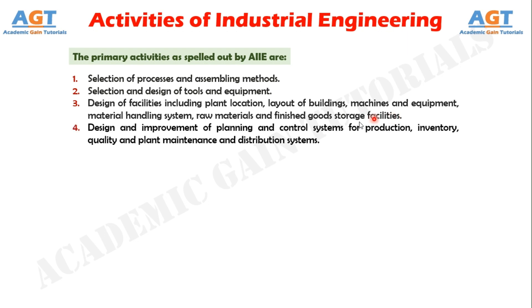Number four, design and improvement of planning and control systems for production, inventory, quality and plant maintenance and distribution systems.